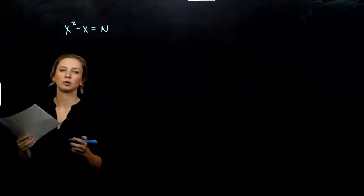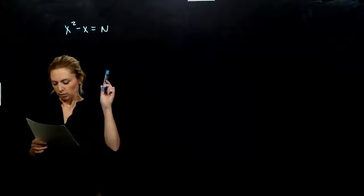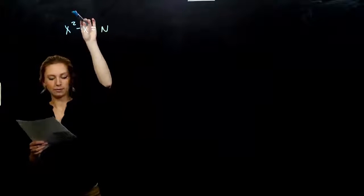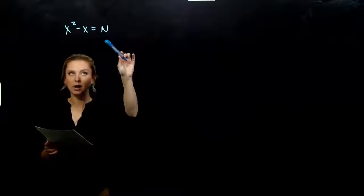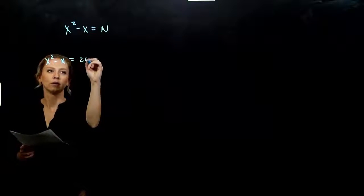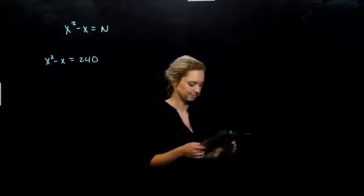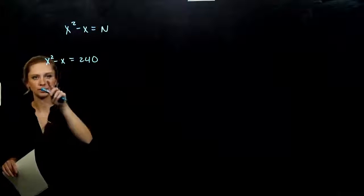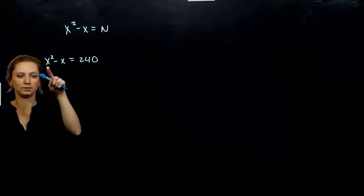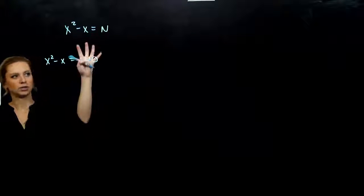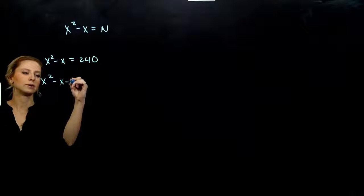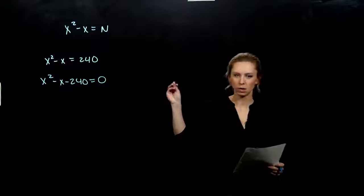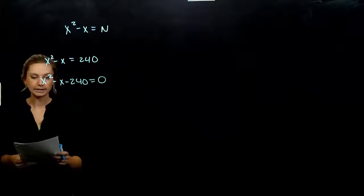What piece of the polynomial do we have information for? A total of 240 games — that's n. I have n and I'm trying to solve for x, the number of teams. So n = 240, and we plug in: x squared minus x = 240. Move 240 to the left: x squared minus x minus 240 = 0. We have our plain trinomial equal to zero with a positive x squared term.